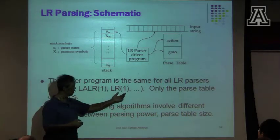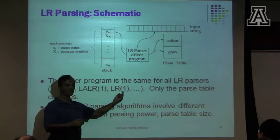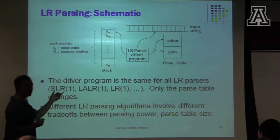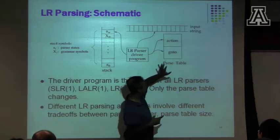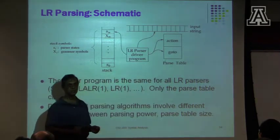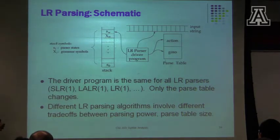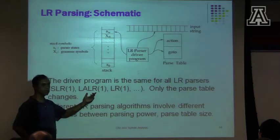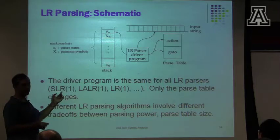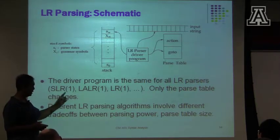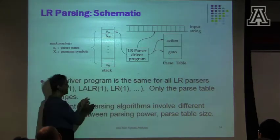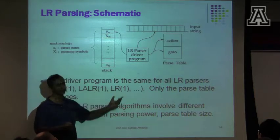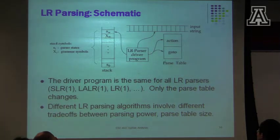SLR stands for Simple LR — it produces the smallest parse tables, but it's a less powerful algorithm in the sense that there are some grammars it can't handle. LR1 is much more powerful and handles many grammars that SLR1 cannot, but the cost is that the parse table is significantly larger. LALR1 is somewhere in between — more powerful than SLR1, much cheaper than LR1 in terms of table size, but with intermediate power. More space for the parser means a more powerful parsing algorithm.